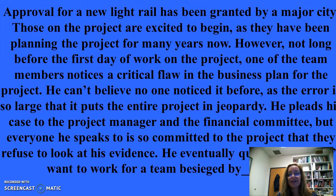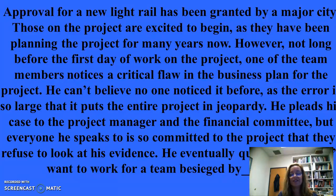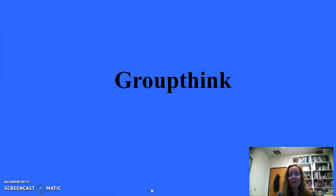For 400: Approval for a new light rail has been granted. One team member notices a critical flaw in the business plan that puts the entire project in jeopardy. He pleads his case to the project manager and financial committee, but everyone is so committed to the project that they refuse to look at his evidence. He eventually quits — the team is besieged by groupthink. Groupthink is a tendency among cohesive groups to believe their decision must be right, that all members must strongly support it, and that contradicting information should be ignored. Once groupthink is in place, groups are unwilling to change their decision even in the face of evidence it was a bad one.